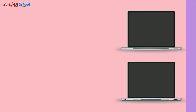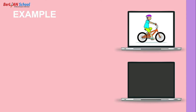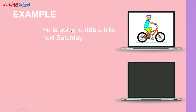For example, look at this picture: 'He is going to ride a bike next Saturday.' The subject is 'He', so we use 'is'. After 'is' comes 'going to', then the verb in base form: 'ride'. Then the object: 'a bike'. Time expression: 'next Saturday'. It means: he will ride a bike next Saturday — the activity has not happened yet.